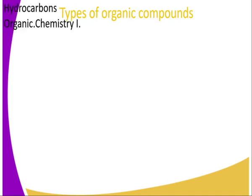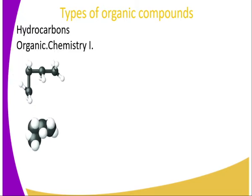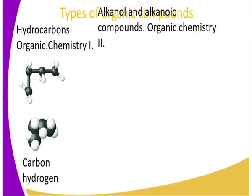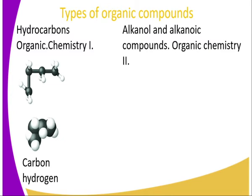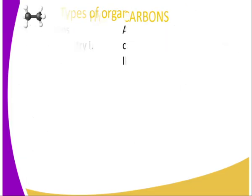What are the types of organic compounds? We have what we refer to as hydrocarbons, which we normally look at in Organic Chemistry 1. A hydrocarbon is a compound that is made up of carbon and hydrogen atoms only. We also have alkanoic compounds, also known as carboxylic compounds, which we study in Organic Chemistry 2, classified as a topic in Chemistry Book 4. Alkanoic acids are compounds that are made up of carbon, hydrogen, and oxygen. Those are the two main types of organic compounds.